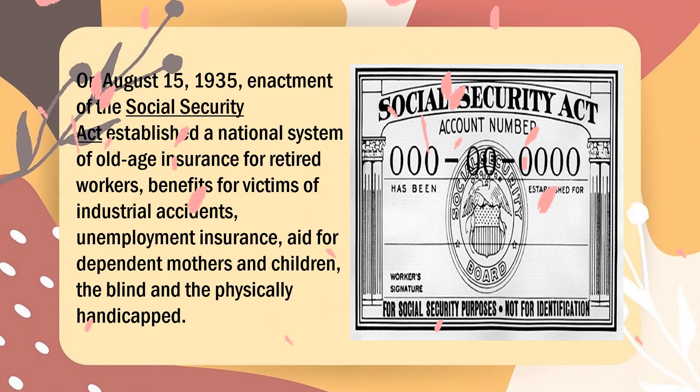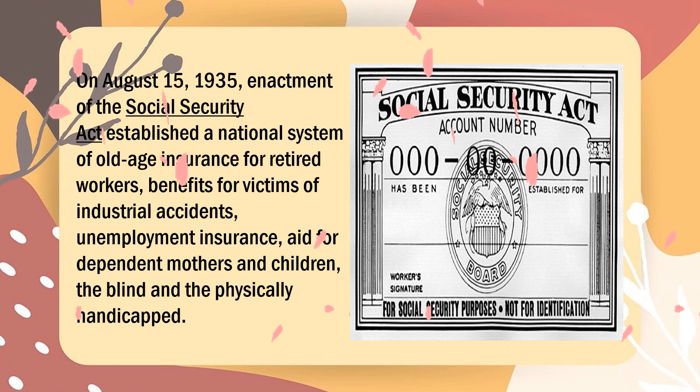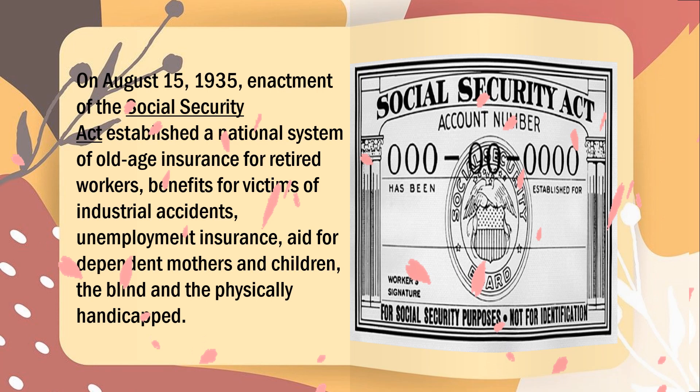On August 15, 1935, enactment of the Social Security Act established a national system of old-age insurance for retired workers, benefits for victims of industrial accidents, unemployment insurance, aid for dependent mothers and children, the blind, and the physically handicapped.